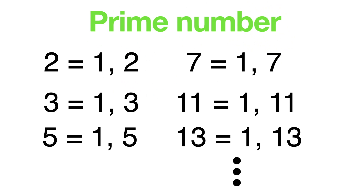You can also find GCF by prime factorization. Prime numbers have only two factors: one and itself. For example, two is a prime number because two has factors of one and two. Three is a prime number with factors of one and three. Five has factors of one and five. Seven has factors of one and seven. Eleven has factors of one and eleven. Thirteen has factors of one and thirteen, and so on.